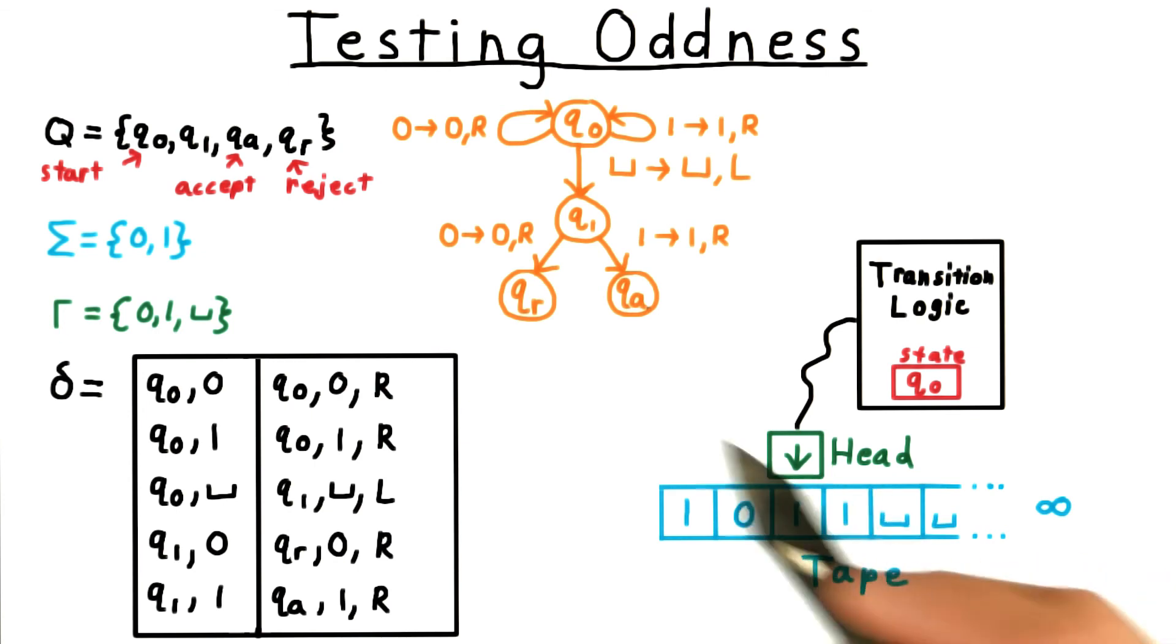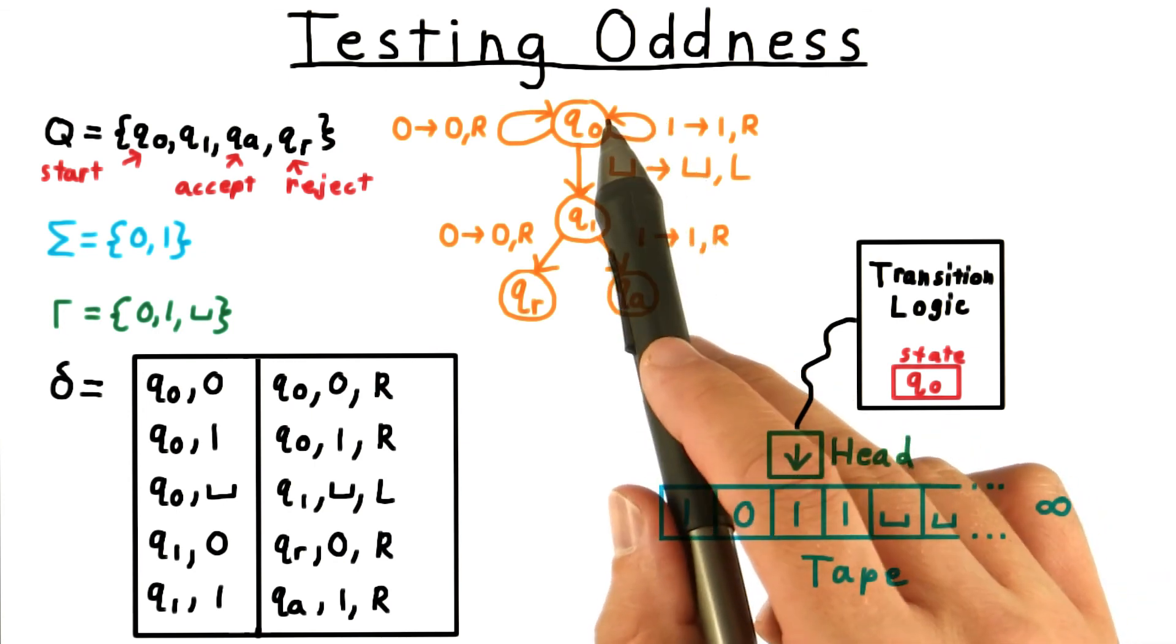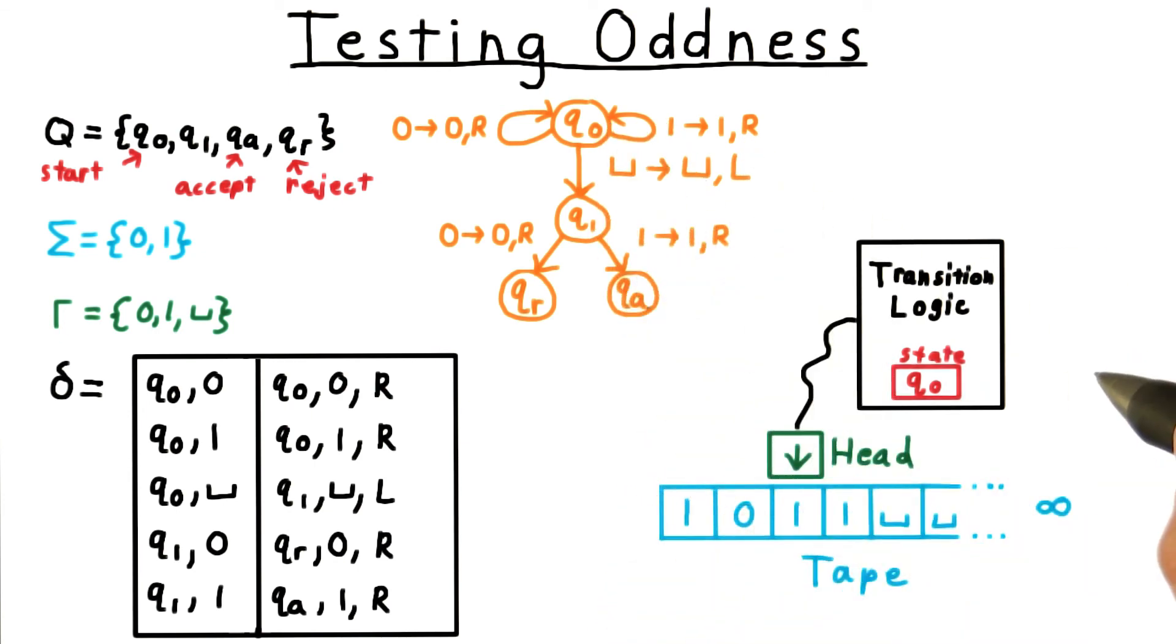We read a 1 from the tape, and that means we follow this transition here, and move the head to the right again. And the next step is similar.